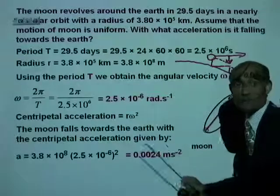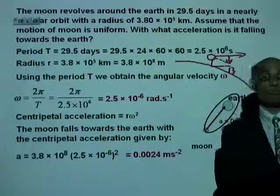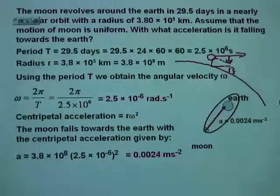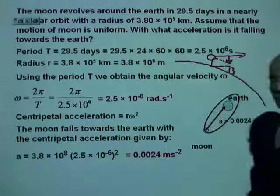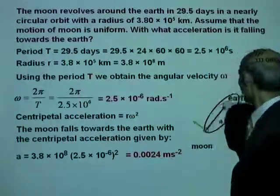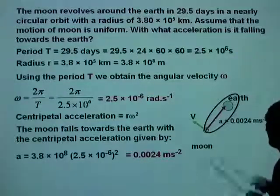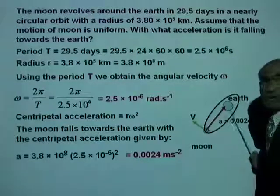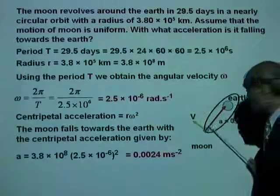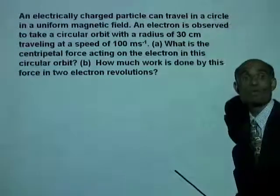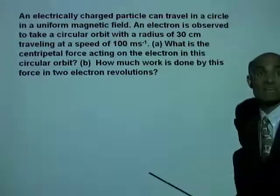The Moon is actually falling towards the Earth at this constant acceleration. In the absence of this acceleration, the Moon would simply go away along the tangent.